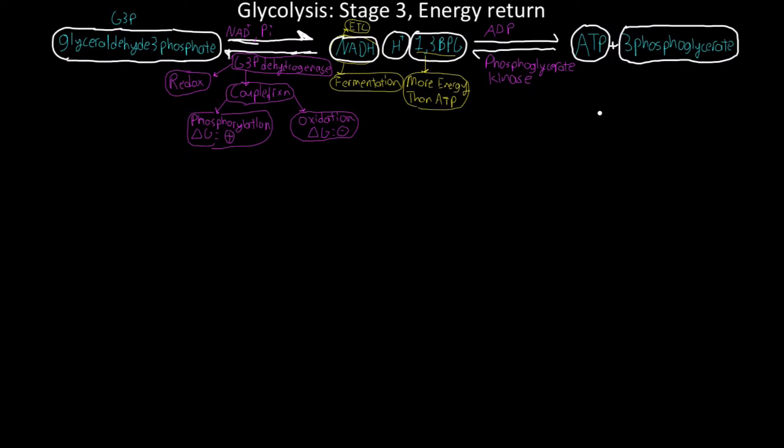What's going to happen next is 3-phosphoglycerate is going to react in equilibrium with a mutase. The phosphoglycerate kinase is doing substrate level phosphorylation. I think I made a video about this concept a very long time ago for microbiology students. Basically we just make an ATP through a kinase enzyme.